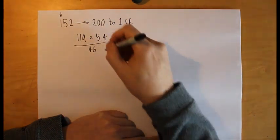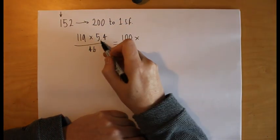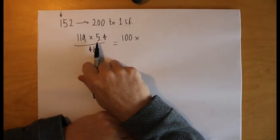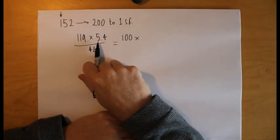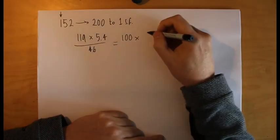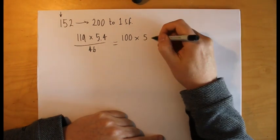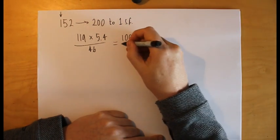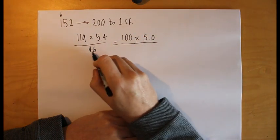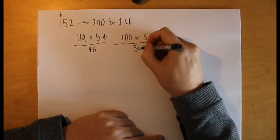It's multiplied by 5.4 and although this is a decimal, the same rules apply. Our first significant figure is five and we simply ask, is it affected by the number after? In this case no, it remains as five. The 46, the 4 is affected by the 6, so it becomes 50.